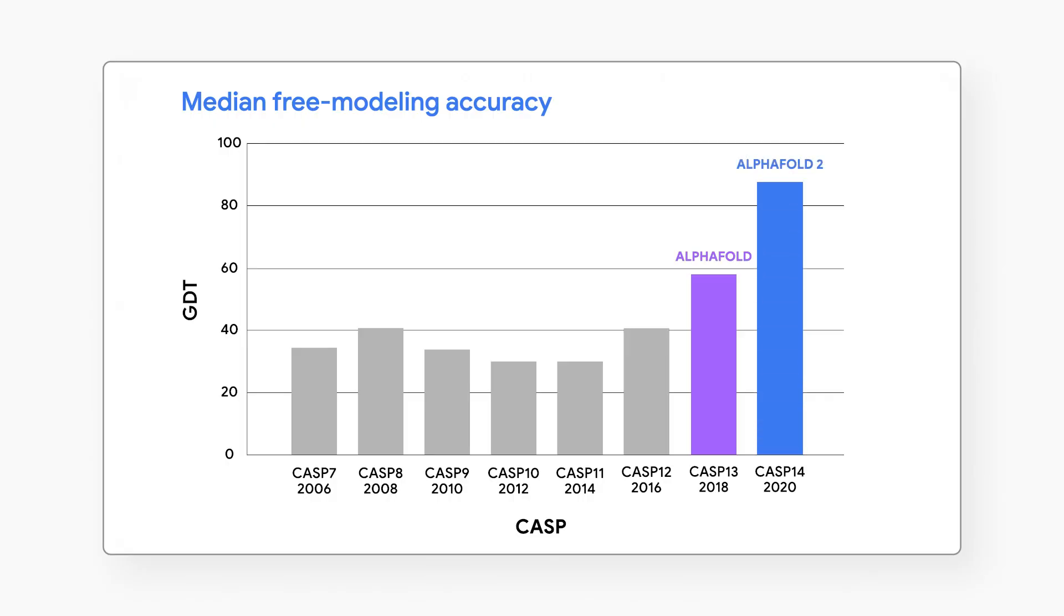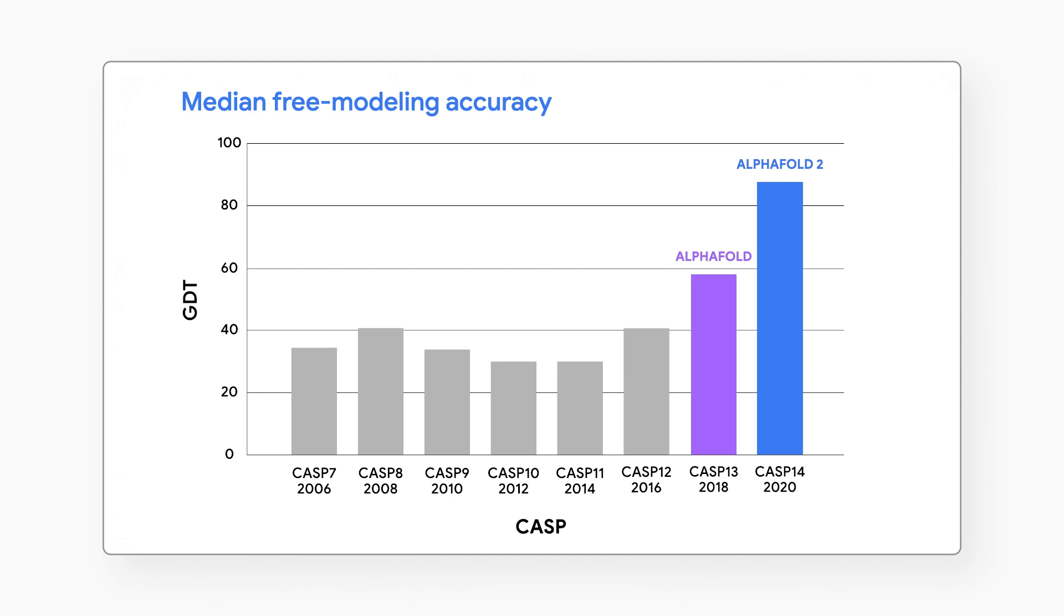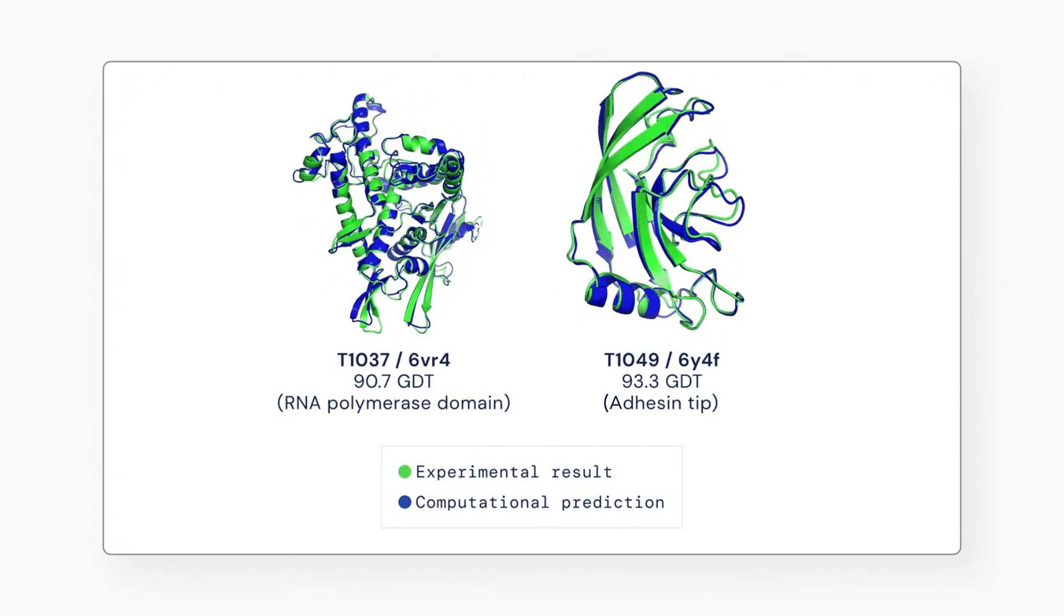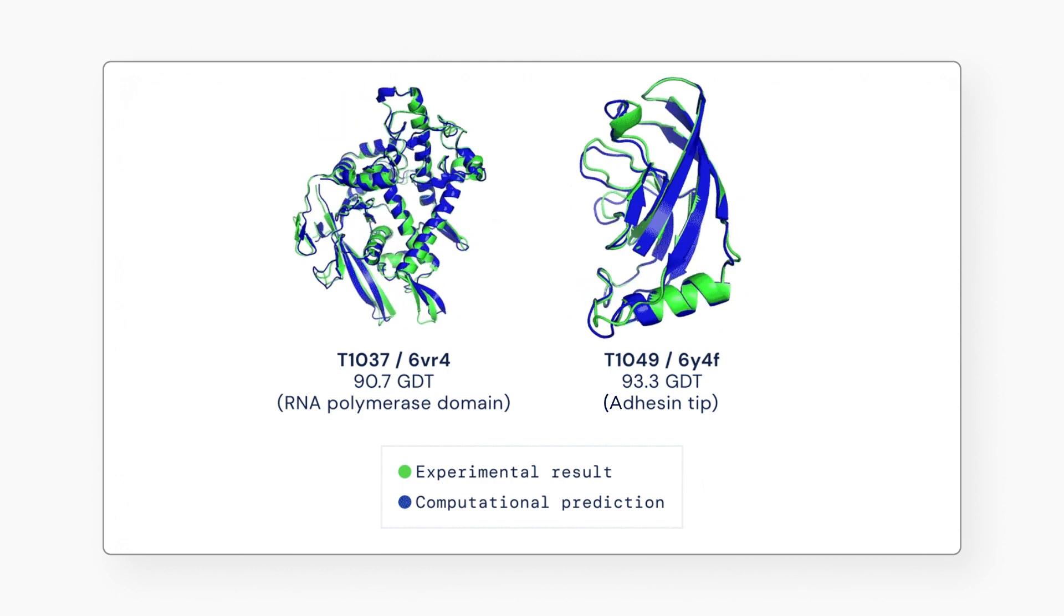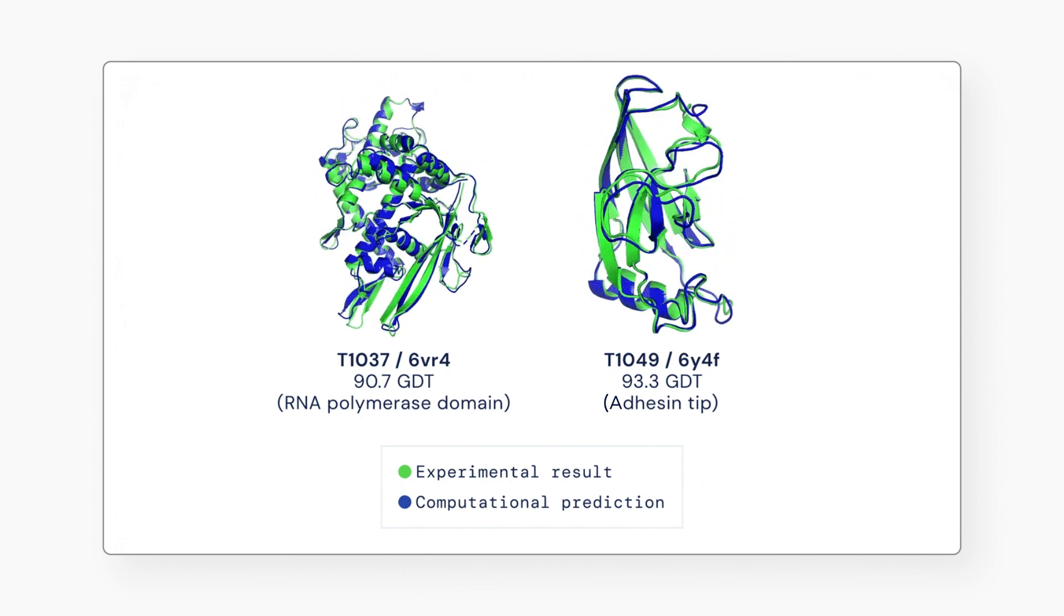Their most recent version, AlphaFold 2, was validated in the prediction challenge CASP 14. It's already sent waves throughout the scientific community and has demonstrated the potential for AI to aid fundamental scientific discovery.